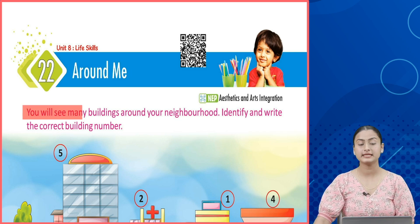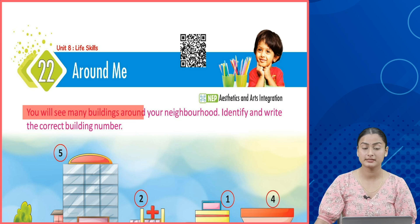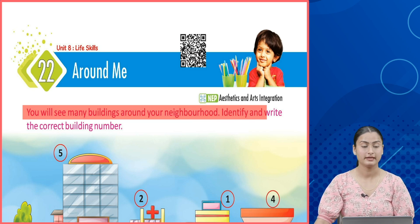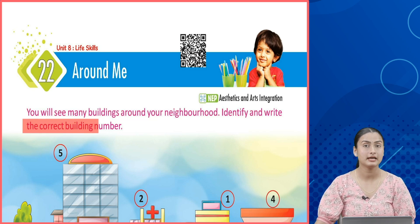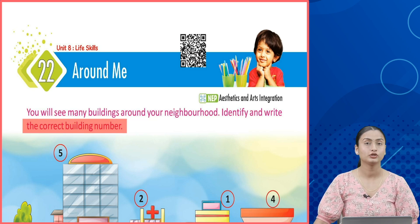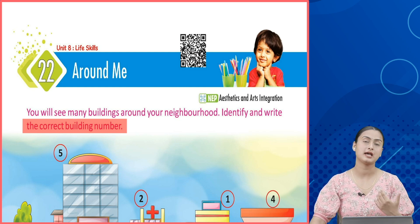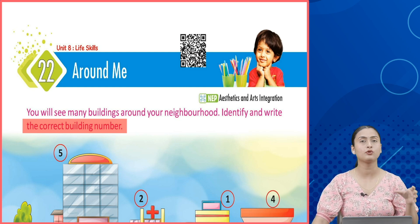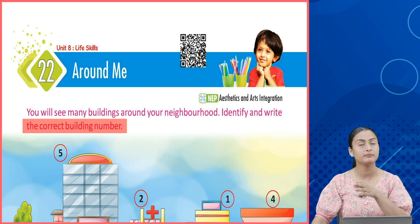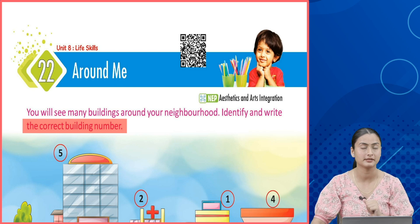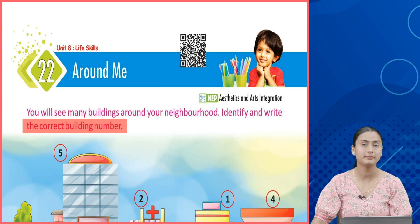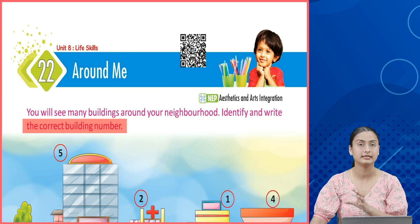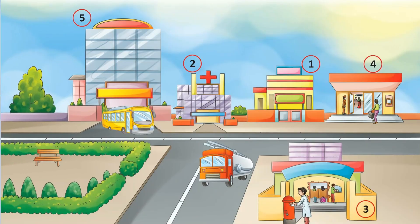You will see many buildings around your neighborhood — identify and write the correct building number. तो आपके neighborhood यानि की आपके आस्पास में आपको अलग-अलग type की buildings देखने को मिलती है। इन pictures में वोही buildings mentioned हैं। हमें सही number के आगे उनके सही नाम mention करने हैं।